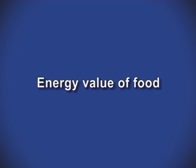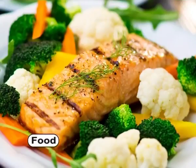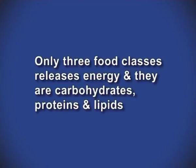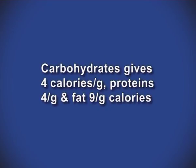The energy value of a food indicates its value to the body as a fuel. After a food is ingested, some of its energy may be lost during digestion and metabolism. Only three food classes release energy: carbohydrates, proteins and lipids. Carbohydrates give 4 calories per gram, proteins 4 calories per gram, and fat 9 calories per gram.